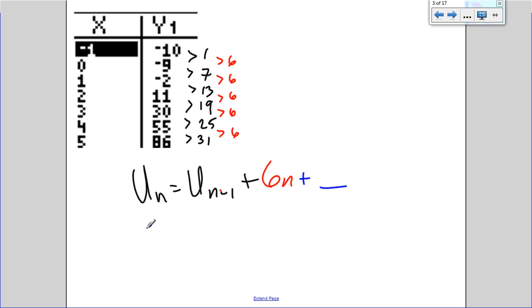So let's use u sub 2 again. u sub 2 equals u sub 1 plus 6 times 2 plus some adjustment. u sub 2 is 11. u sub 1 is negative 2 plus 12 plus something. So I get 11 equals 10 plus something, so that's probably going to be a plus 1.